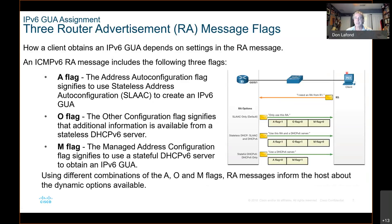And then the M flag — M is managed. These letters are really easy to remember: A is automatic, it stands for auto configuration; O is other, meaning some configuration comes from the router and the rest comes from the DHCP server; and the M means that it is stateful and everything is managed by the DHCPv6 server.